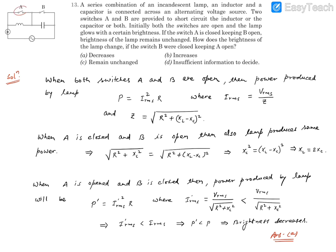Now if we open A and close B, then you will find it is going to be an RL series circuit. When it is RL series circuit, then the impedance is going to be R squared plus XL squared.